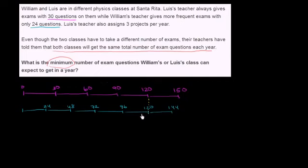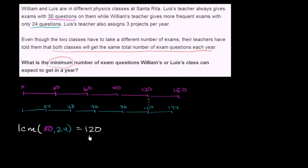Thinking of it in terms of math notation, or the least common multiple notation we've seen before, this is really asking us: what is the least common multiple of 30 and 24? And that least common multiple is equal to 120.